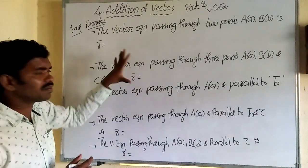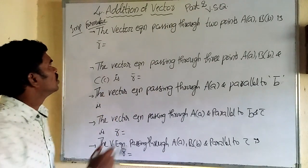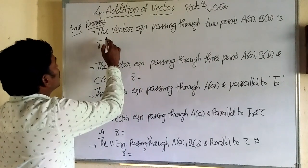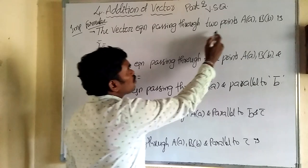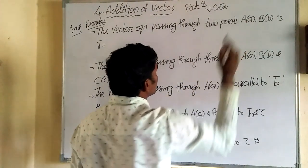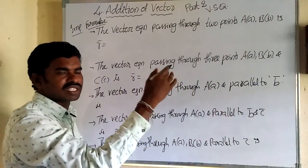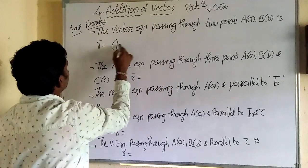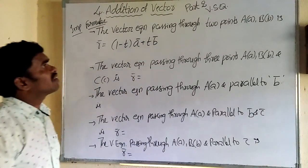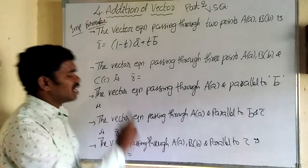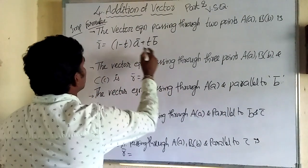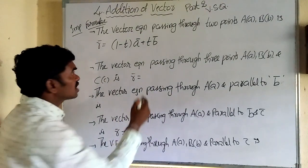See the key formulas from these five concepts — one question is compulsory in the exam. First concept: the vector equation passing through two points A(a) and B(b) is r̄ = (1 − t)ā + tb̄, where a and b are position vectors of the two points.